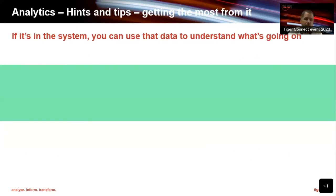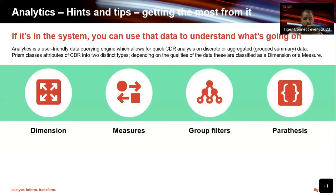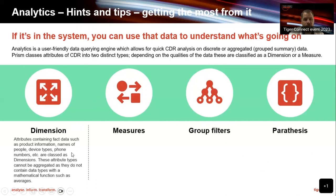Now we're going to talk about analytics and then I'll do a quick demo tying those three subjects together. If it's in the system, you can use it and understand what's going on. Analytics is very user-friendly. Those that haven't used it — we're just running reports, but we have something like 1,240 different fields you can search on and set criteria around. I want to explain four key areas first. You've got dimensions — these are attributes containing fact data such as product information, name, and services. It's hard information: a phone number, a model, a name, that type of thing.